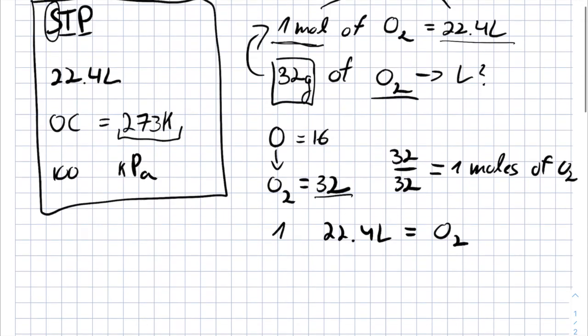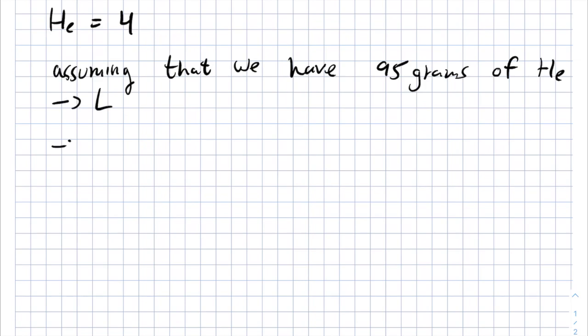Let's take another example. The molecular weight of helium is 4. Assuming that we have, let's say, 95 grams of helium and we want to get the number of liters and the number of moles. How are we going to do that?